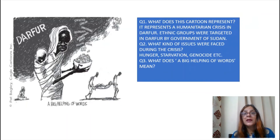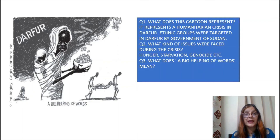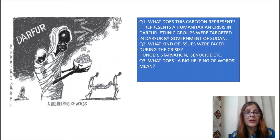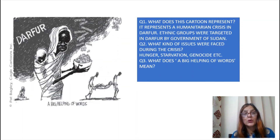The next cartoon represents a humanitarian crisis in Darfur, where ethnic groups were attacked by the government of Sudan. The issues shown in the cartoon are starvation, genocide, and hunger. The phrase 'a big helping of words' comments on the role of international organizations — that beyond words and speeches, no actual help reached the people. This is the message being conveyed through this cartoon.